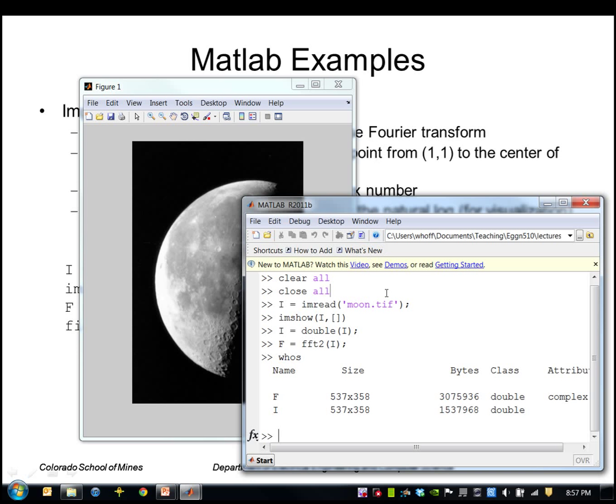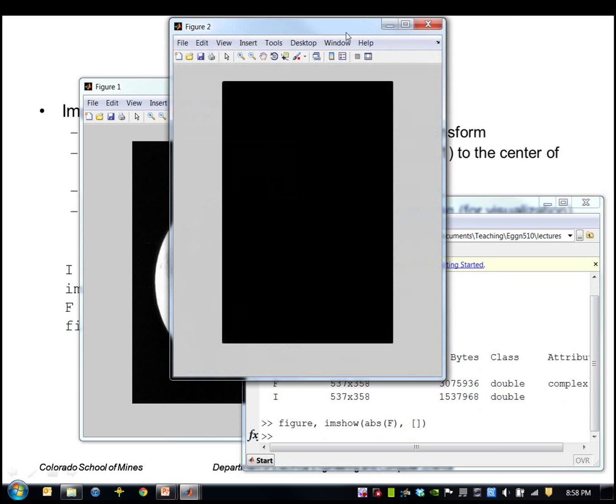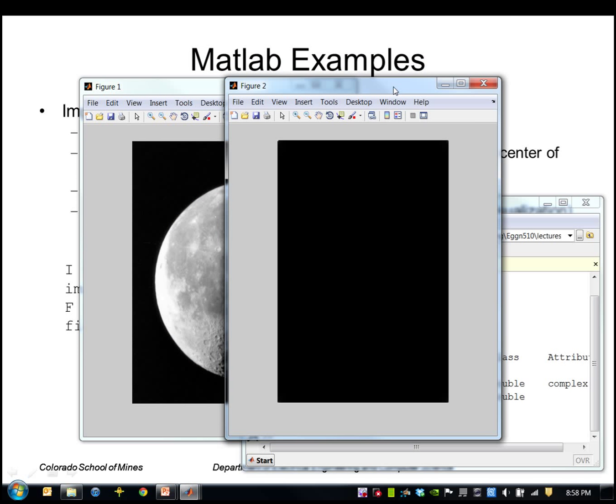We can't show a complex image, we have to convert it to real. So MATLAB has a function called ABS taking the absolute value. If I do that, I get almost a blank image. The reason is that the DC component is so much larger than all the other values that it swamps them out. The DC value is actually up here in the upper left corner.